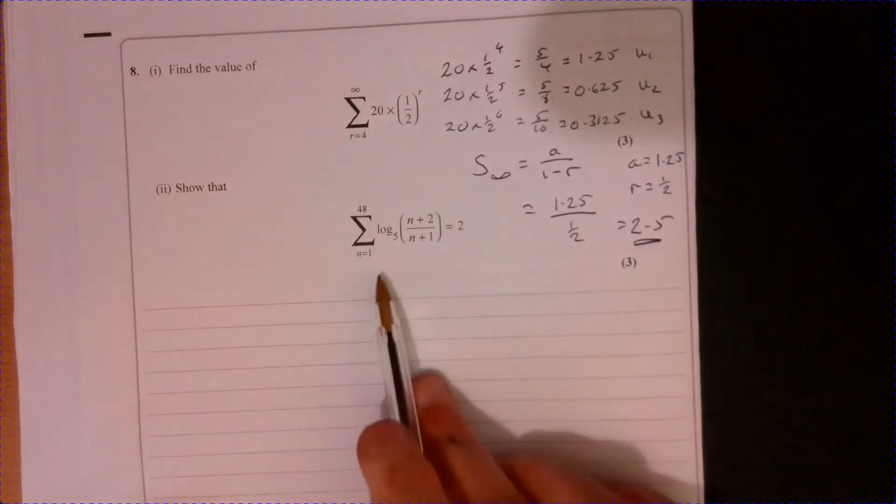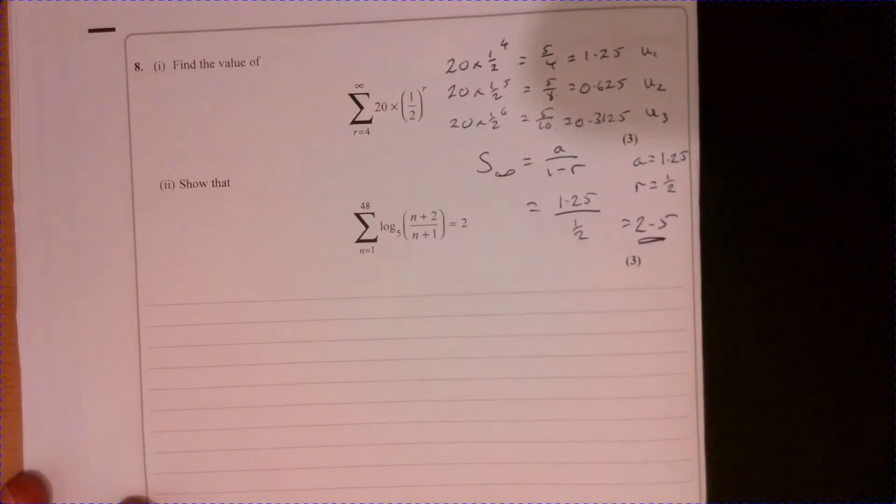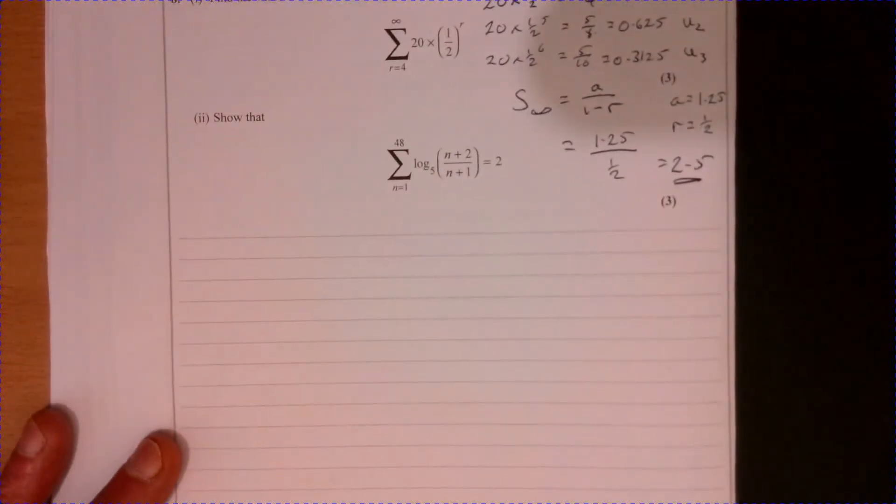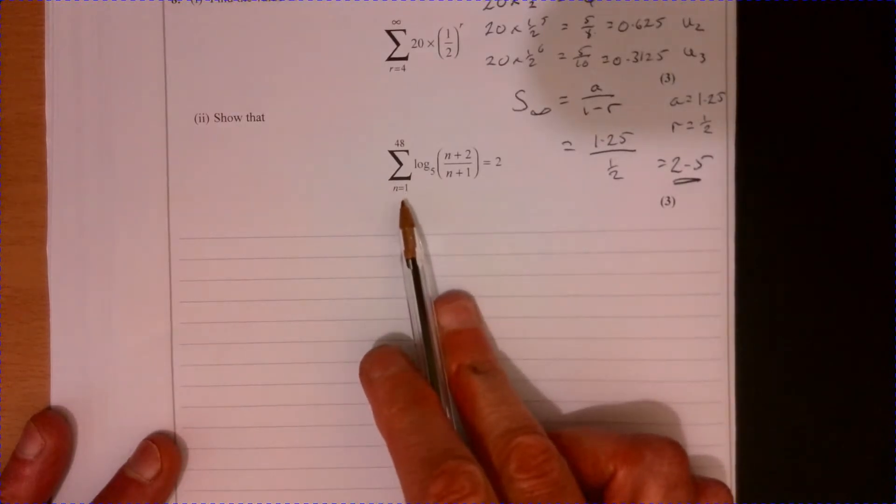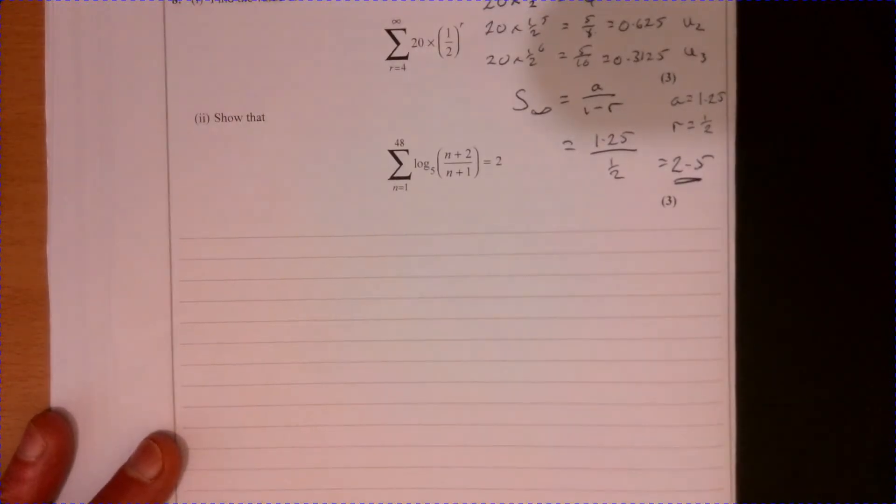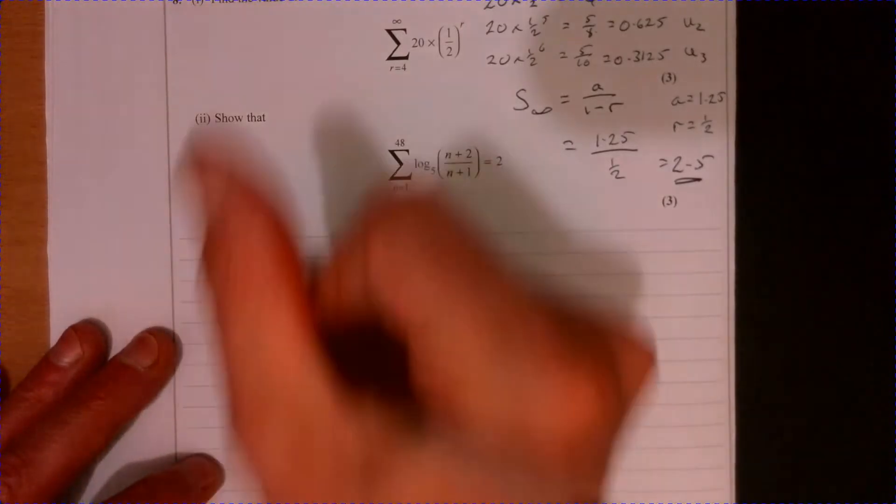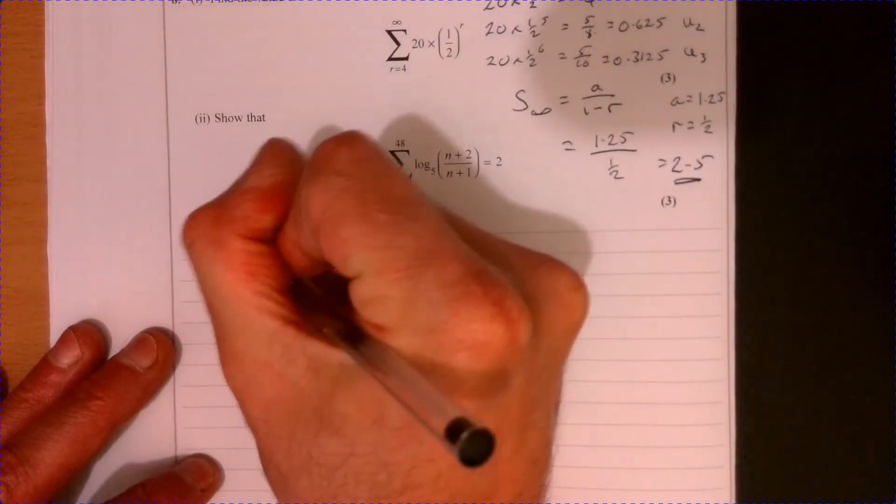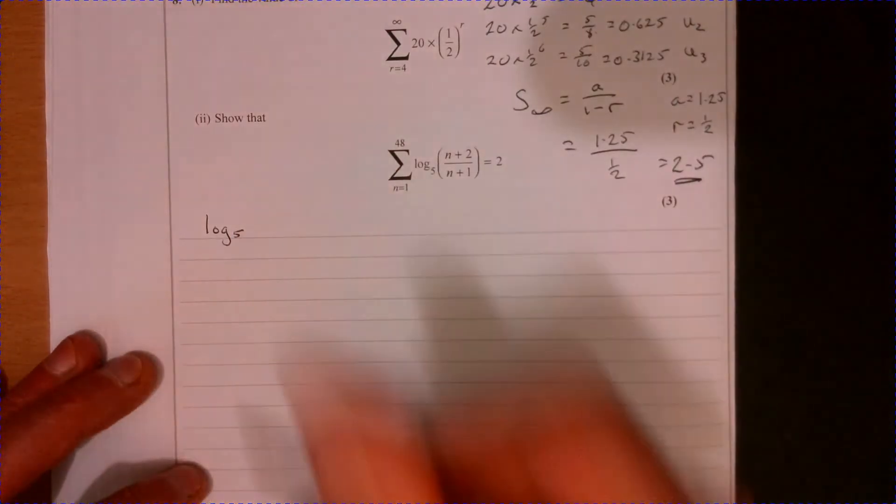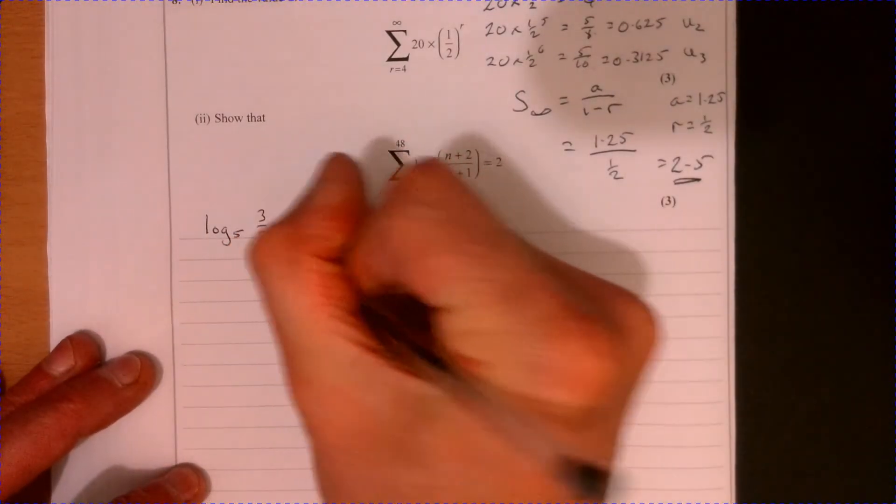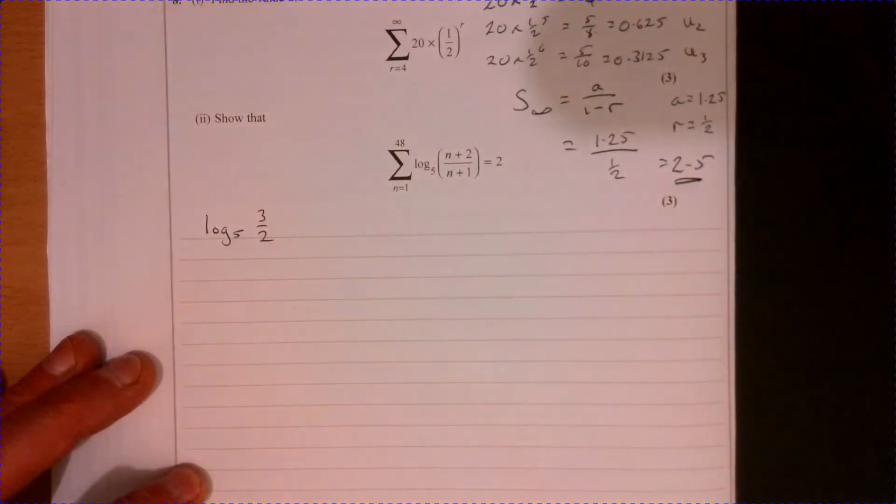Let's have a look at part two. Initially you think, oh dear this looks dreadful. So again let's do the same sort of thing, just write out the first few terms and you'll get a feeling of what it's going to look like. You're going to get log base 5 of 3/2.